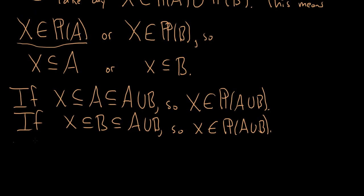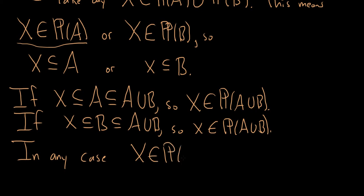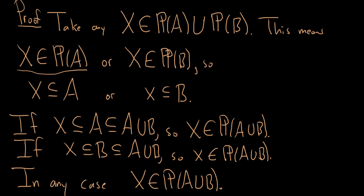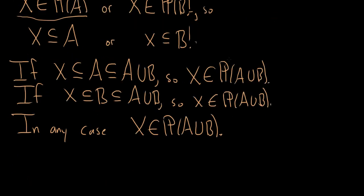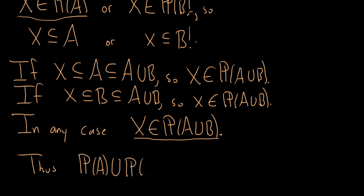In any case, X is in the power set of A union B. So we started with an element — in this case a set — in this other set, and we showed that it belongs to this set here. And since we did this for any element, it must be true for every element, and so thus we have shown that the power set of A union with the power set of B is a subset of the power set of A union B. And that completes the proof.